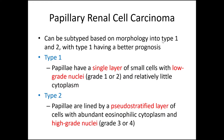Papillary renal cell carcinoma can be split into type 1 and type 2. Type 1 is generally a lower grade tumor and type 2 is generally a higher grade tumor. Type 1 tends to have a single layer of cells with nuclei that are generally grade 1 or 2 on the Fuhrman nuclear grading system, and relatively little cytoplasm. Type 2 has more abundant eosinophilic cytoplasm, tends to be pseudostratified with multi-layering of the epithelial cells along the papillae, and nuclear grade tends to fall within range 3 or 4.